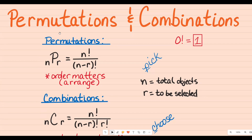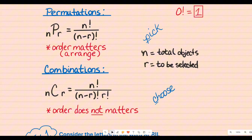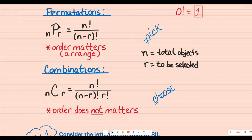What you see is the formula for permutations, and in a word problem or scenario you're looking for keywords like 'arrange' because order does matter. For combinations, it looks like permutations, except you also have to divide out the r factorial because you don't want to duplicate it — in this situation the order does not matter. For P, think of 'pick,' and for C, think of 'choose.'